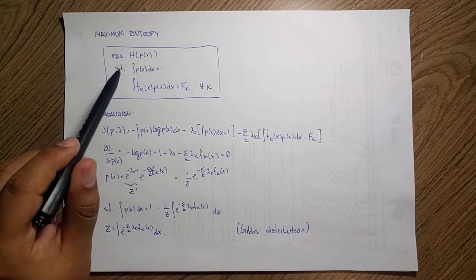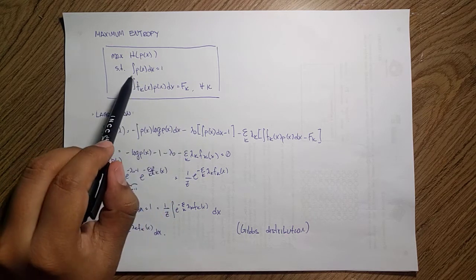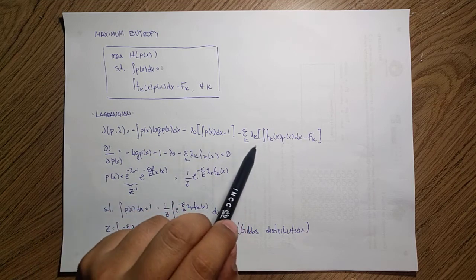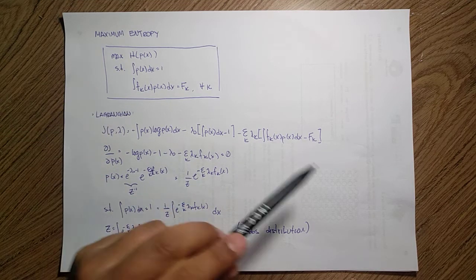We want to maximize that thing subject to these restrictions. Similarly, we have k restrictions over here. We have k of this integral, so we have k lambdas over here such that this integral is also up to f_k.